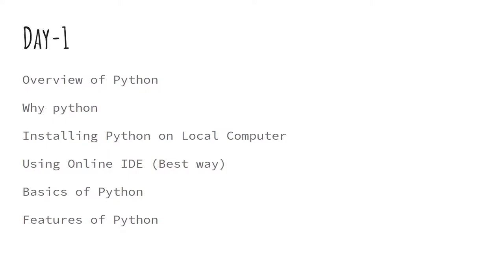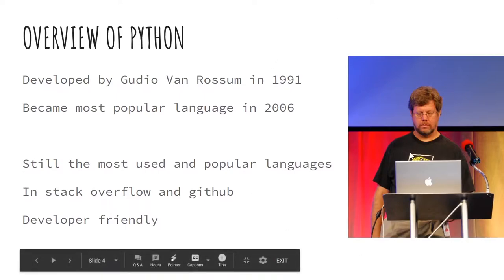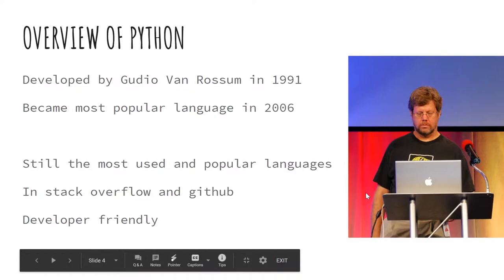Overview of Python: Python is developed by Guido van Rossum in 1991. Python is a scripting language. He wanted to create a language which is nearly equal in syntax to English, so everyone can learn and write their own code very easily — hence he created Python.